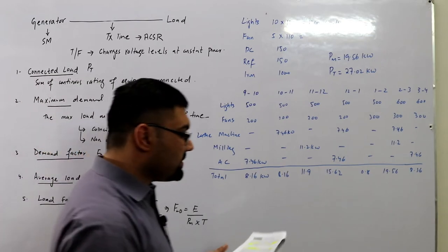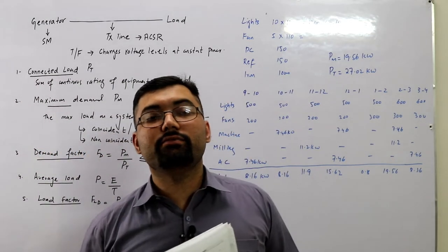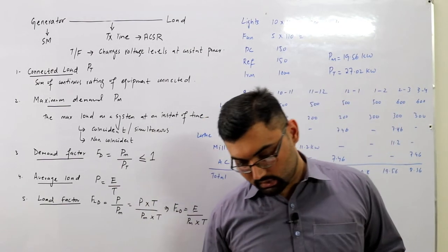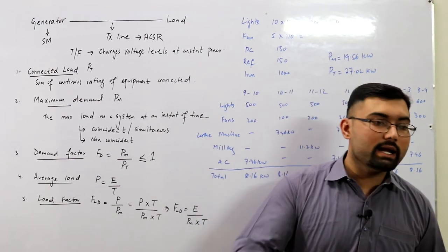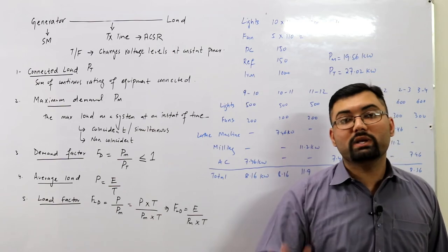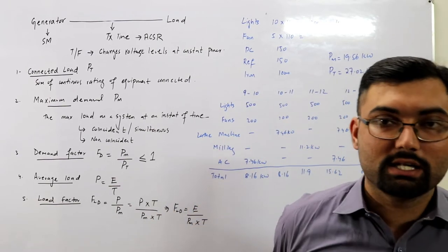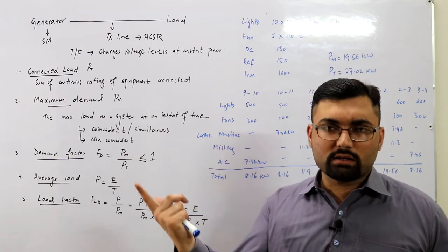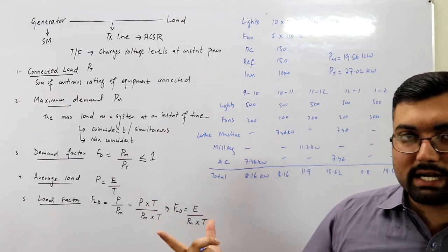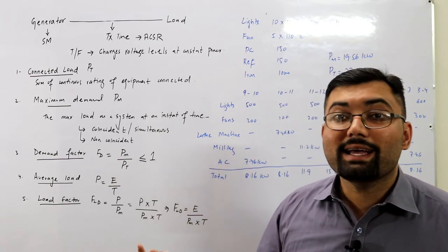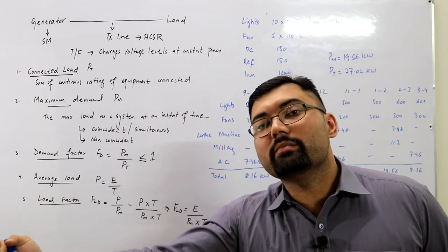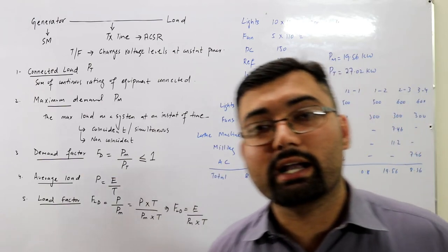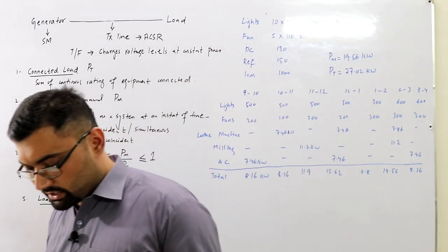There is also the concept of station maximum demand at the generating end. For example, if the load-side maximum demand is 90 megawatts and the plant has four units each of 100 megawatts, you only need to turn on one unit to feed that load. So the load-side maximum demand is 90 MW while the generating-end station maximum demand is 100 MW.